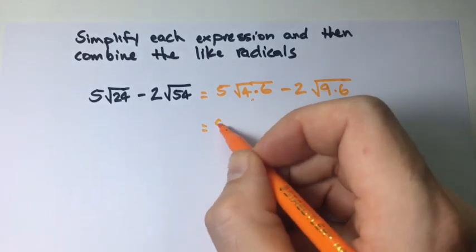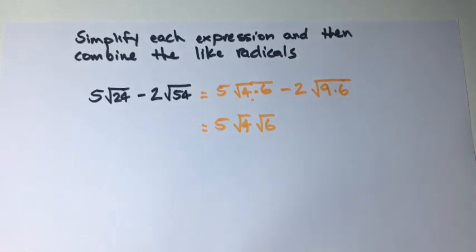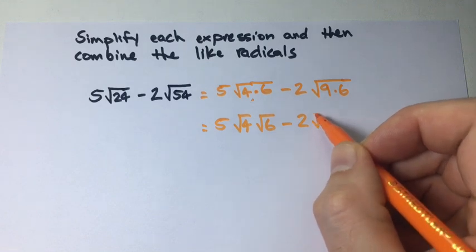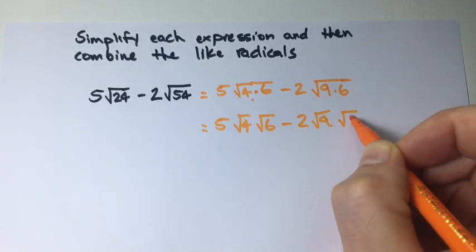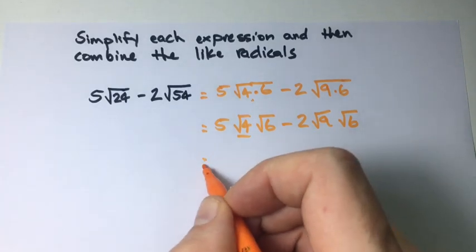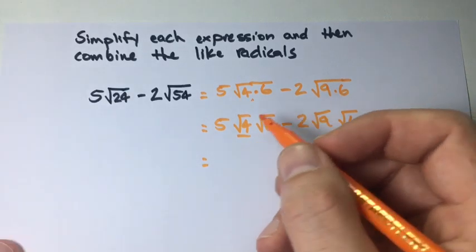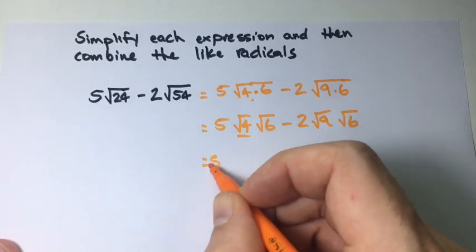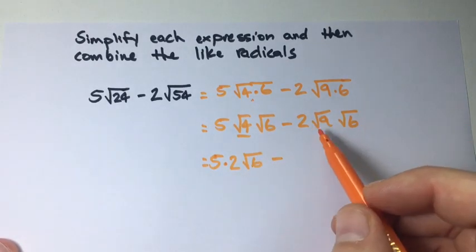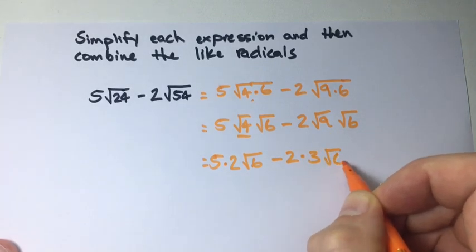So now we have 5 times the square root of 4 times the square root of 6, minus 2 times the square root of 9 times the square root of 6. We know 4 is a perfect square, so its square root equals 2. That gives us 5 times 2 times the square root of 6 minus 2, and the square root of 9 is 3, times the square root of 6.